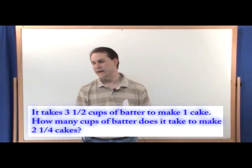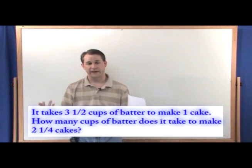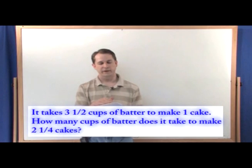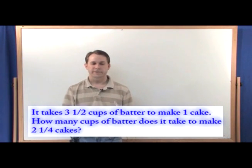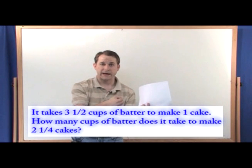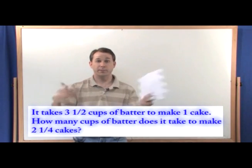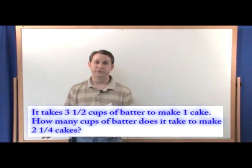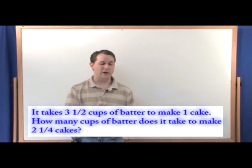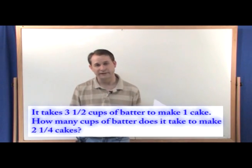Well if you think about this, if it were a whole number of cakes, I mean if it were two cakes you were trying to make, then you would just double the amount of the batter. So you'd be multiplying by two in order to make two cakes because you'd know how much batter it takes for one cake.